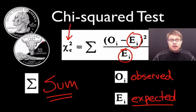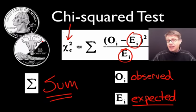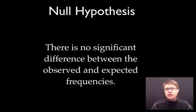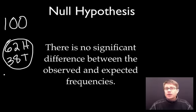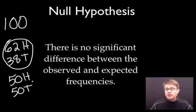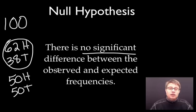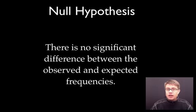Let me give you an example with these coins. Let's say I flip a coin a hundred times and get 62 heads and 38 tails. Is that due to just chance, or is there something wrong with the coin or the way I'm flipping it? The chi-squared test allows us to answer that. In my head is something called a null hypothesis — we said 62 heads and 38 tails as observed values, but expected values would be 50 heads and 50 tails. The null hypothesis says there's no statistically significant difference between observed and expected frequencies.